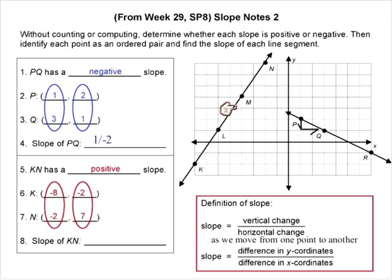So for segment KL right here, what is the difference between the Y coordinates? Go ahead and type in your chat box. And then also tell me what is the difference in the X coordinates. And then finally, I will have Shelly, if you can type in the space that I'm pointing at the slope for segment KN.